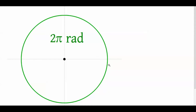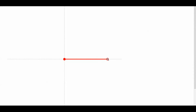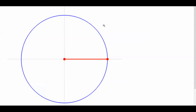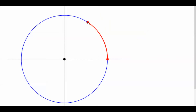Let's watch that animation again. Focus on the fact that the radius of the circle is being extended up into the length of the arc — the radius and the length of the arc are exactly the same. When that is the case, the angle that does that is called a radian. That's the key.